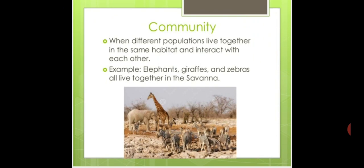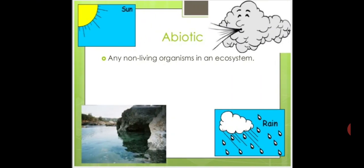Then there is the term community. Community means when different populations live together in the same habitat and interact with each other. Different groups of animals of different species live together in the same place — the habitat — and interact. For example, elephants, giraffes, and zebra all live together in the savannah, and this is called a community of animals.